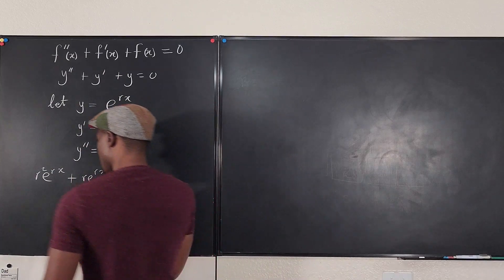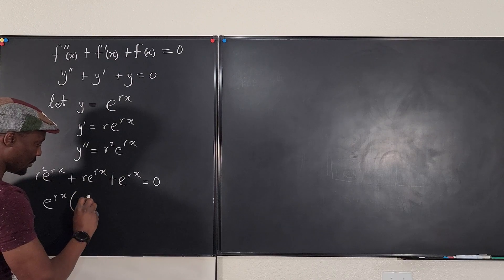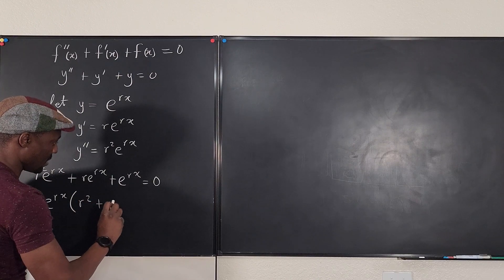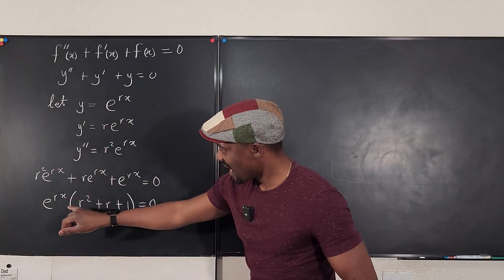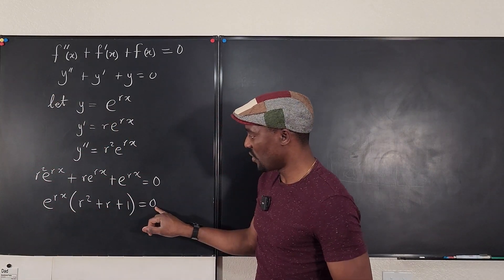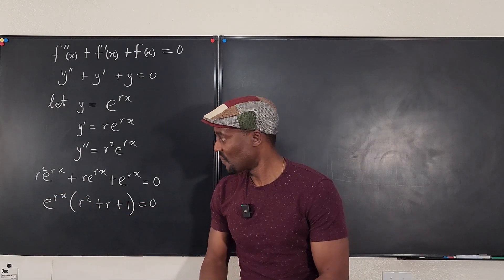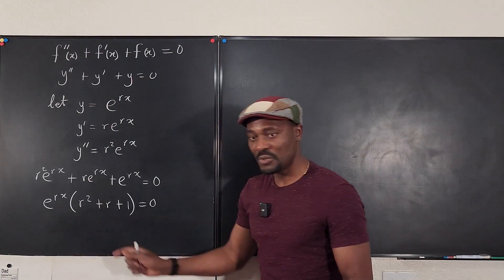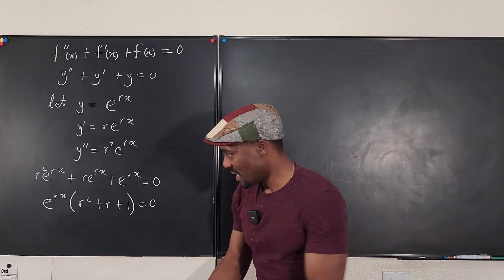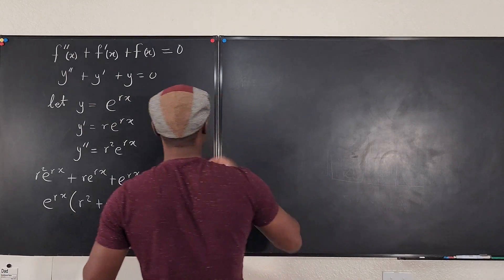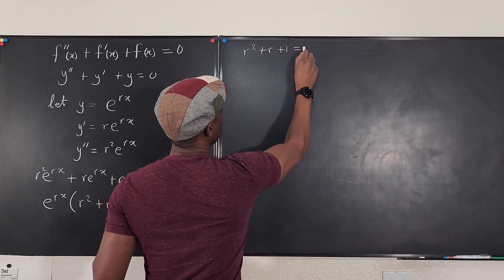We have used these three values we got and substituted it into this function. Now we know that if we factor out the common term, which is e to the rx, we're going to have r squared plus r plus one equals zero. And we know that e to the rx cannot be equal to zero because e to the rx is an exponential function. It can never be zero. So if the product of two things gives us a zero, one of them must be zero. So clearly, this must be zero. And then we can go ahead and say r squared plus r plus one is equal to zero.